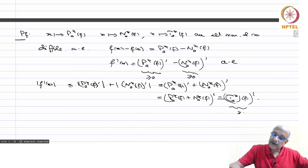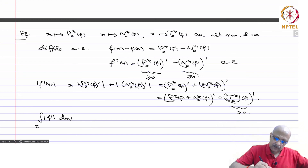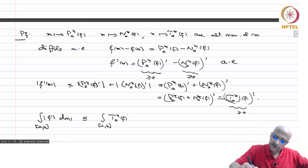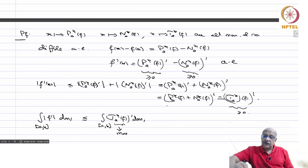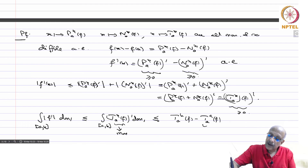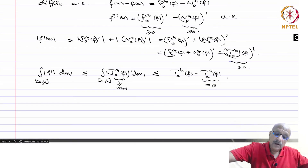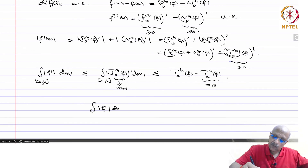Since [T(a,x,f)]' ≥ 0, we have the integral of |f'| dm₁ over [a,b] is less than or equal to the integral of [T(a,x,f)]' dm₁ over [a,b]. Since T(a,x,f) is monotonic increasing, integrating its derivative gives less than or equal to T(a,b,f) - T(a,a,f). Since T(a,a,f) = 0, we have proved that the integral of |f'| dm₁ over [a,b] is less than or equal to T(a,b,f).